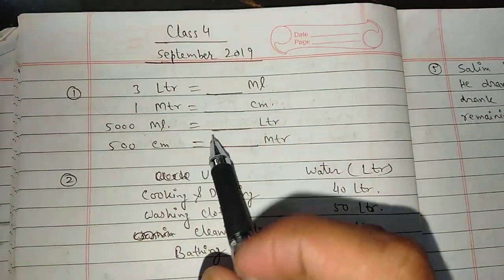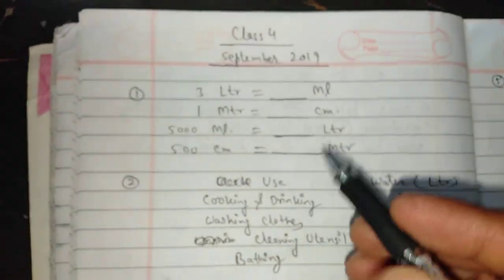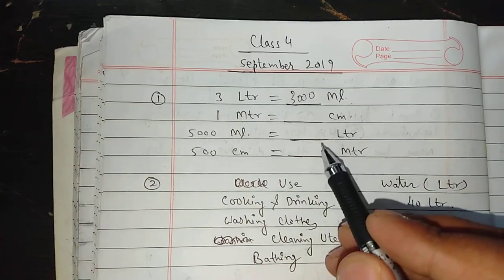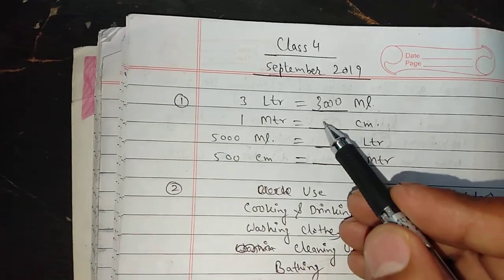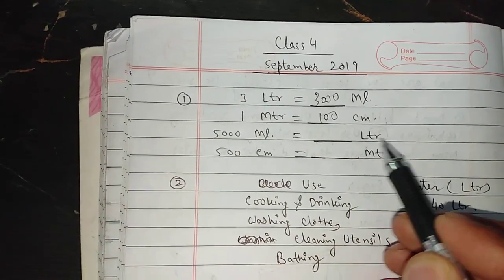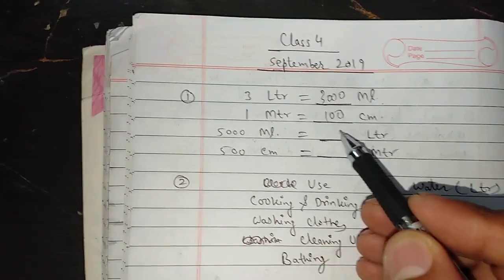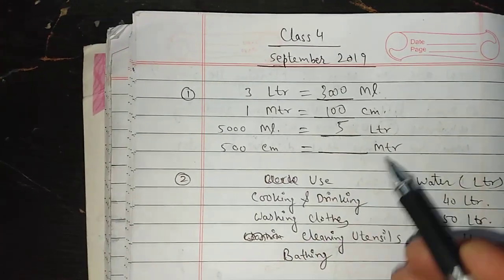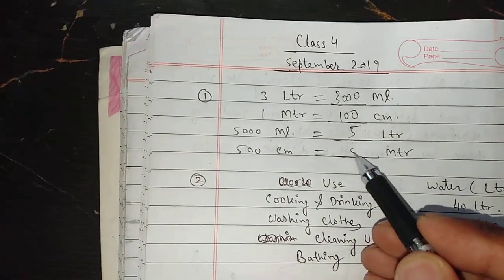How many ml in 3L? 3,000. How many cm in 1 m? 100. How many ml in 5,000? 5. How many cm in 500 cm? 5.